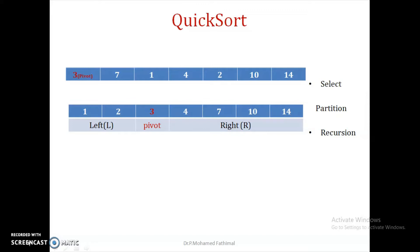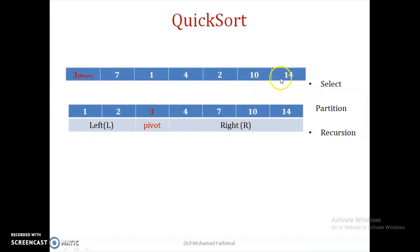So for comparison, we are taking two markers. One is the Ith marker, which is the left-hand side marker, and the Jth marker, which is the right-hand side marker. The Ith marker will be compared with the pivot element, and if that value is greater than the pivot element, it will stop. But if this value is lesser than the pivot element, it will also stop.